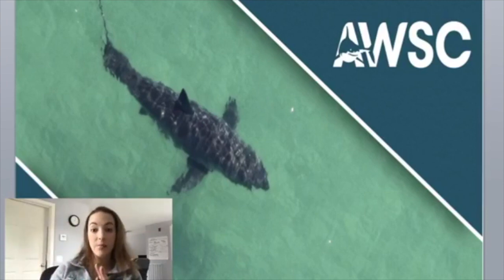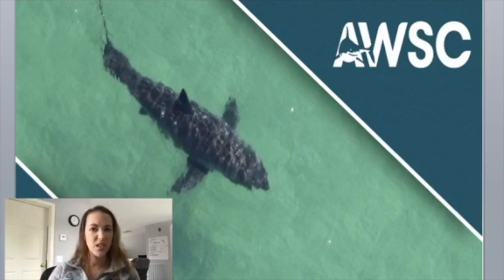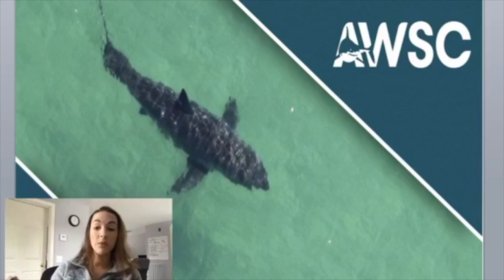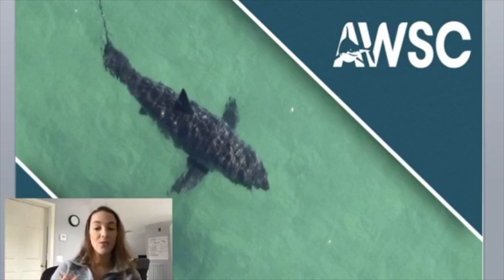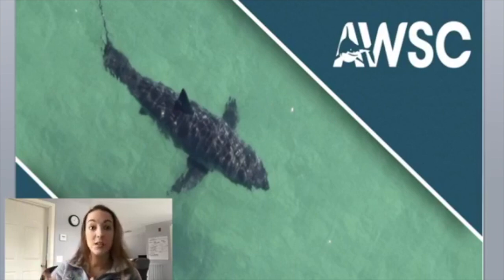On the side of the circle that says sharks, you are going to write down those characteristics that make a shark specifically a shark. Where it says fish, you will write down the characteristics that make a fish specifically a fish. And in the middle where the two circles overlap, that will be the similarities between the two.